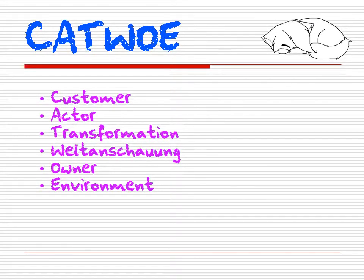So the whole CATWOE consists of those six particular elements: the Customer, the Actor, the Transformation, the Weltanschauung, the Owner, and the Environment. These ideas form the questions you need to ask when analysing an existing situation, or when you sit down to start designing a particular business operation or system. Have you considered each of these elements and thought through what they mean in design terms, or how you set up and operate the particular business?